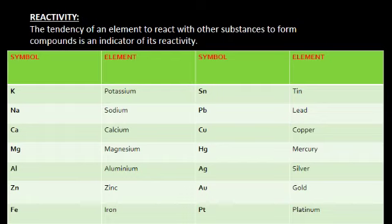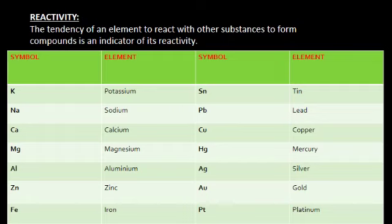Look at the screen — you can see symbols of a few elements. This is the reactivity series of metals. These elements are arranged in decreasing order of their reactivity with other substances. For example, K is at the top, meaning it is the most reactive element, whereas platinum, which is at the bottom, is the least reactive element. Potassium is more reactive than sodium, and calcium is less reactive than sodium and potassium. This is the series which indicates the reactivity of different elements.